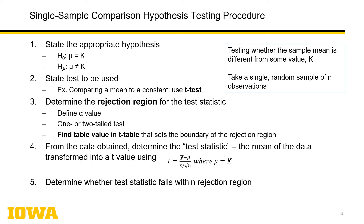The procedure for hypothesis testing: we state the appropriate hypothesis as a null and an alternative. The mean — it's almost always about the mean — is equal to some value k, or it's not equal to some value k. Then you state the test to be used; in this case, a t-test. You then determine the rejection region for the test statistic, and for that you need to pick an alpha value, say 0.05.